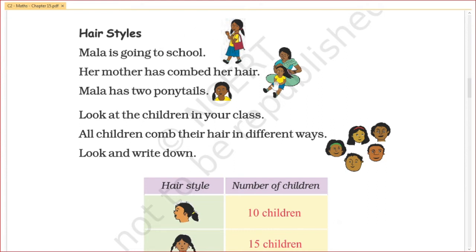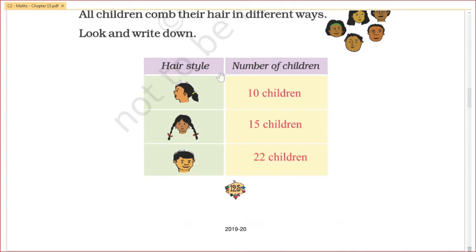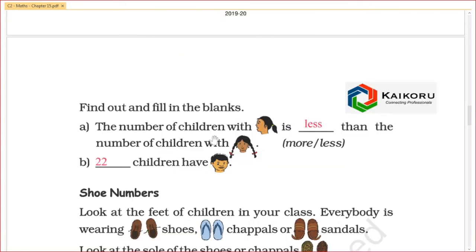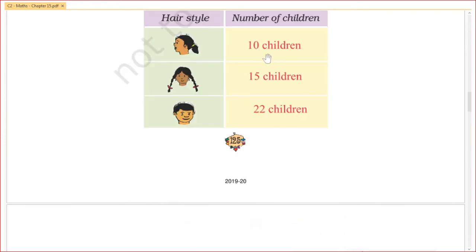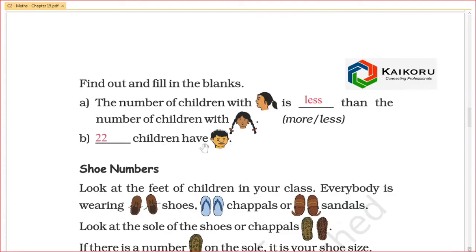Mala is going to school. This is the number of children with different hairstyles. Find out and fill in the blanks. The number of children with one ponytail is dash than the number of children with two ponytails — more or less. The two children have more than two ponytails, so it is less than two ponytails. Dash children have this hairstyle.